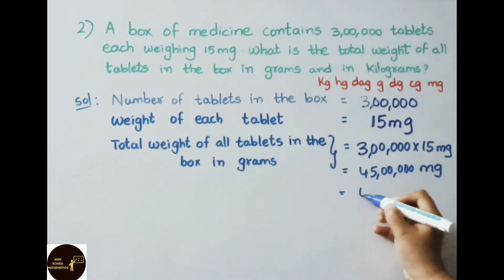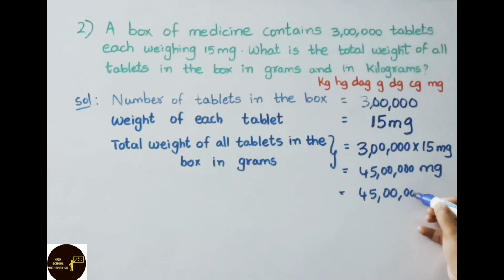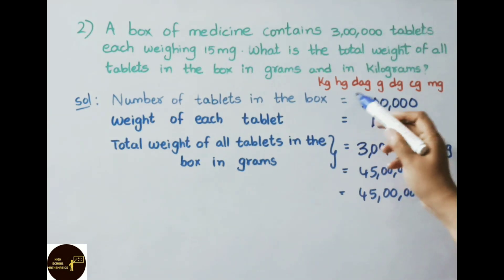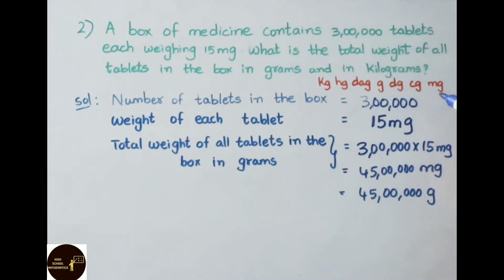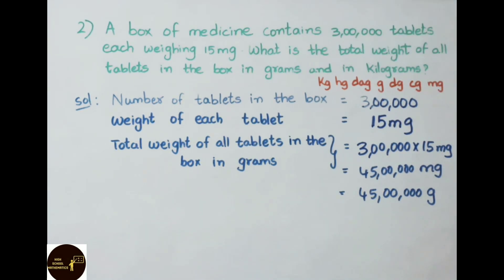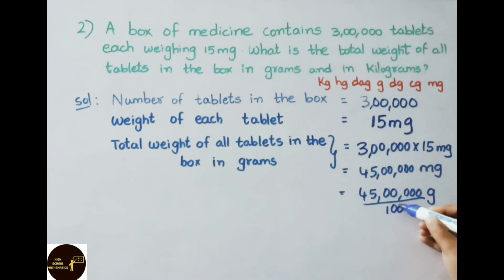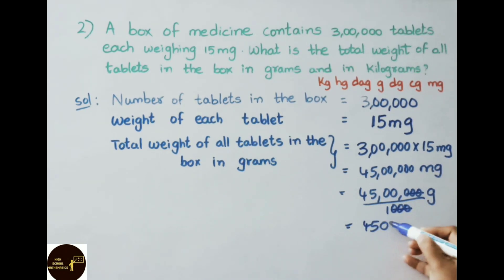Now we need to convert this value into grams. Before conversion, let us see the conversion table: kilogram, hectogram, decagram, gram, decigram, centigram, and milligram. Our value is in milligrams and we need to convert to grams. There are 3 places from milligram to gram, so we multiply by 10 each step — 10, 100, 1000. Since we are converting from a lower unit to a higher unit, we divide by 1000. The 3 zeros cancel, giving us 4,500 grams.